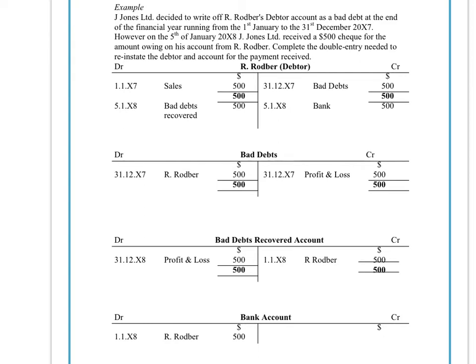On the rare occasion you do get a situation where the debtor, after you've written them off as a bad debt, decides to pay you the amount. If we look here at this example, we can see Rodber is a debtor that we had written off originally as a bad debt, who later pays us back the $500.